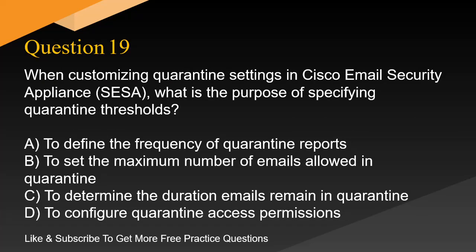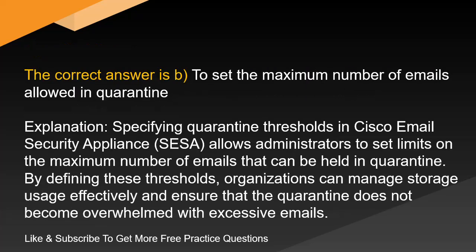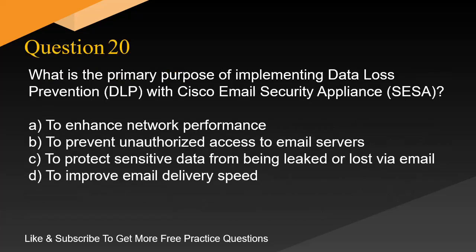Question 19. When customizing quarantine settings in Cisco Email Security Appliance (SESA), what is the purpose of specifying quarantine thresholds? A. To define the frequency of quarantine reports. B. To set the maximum number of emails allowed in quarantine. C. To determine the duration emails remain in quarantine. D. To configure quarantine access permissions. The correct answer is B. To set the maximum number of emails allowed in quarantine. Specifying quarantine thresholds in SESA allows administrators to set limits on the maximum number of emails that can be held in quarantine. By defining these thresholds, organizations can manage storage usage effectively and ensure that the quarantine does not become overwhelmed with excessive emails.